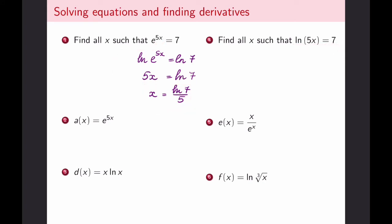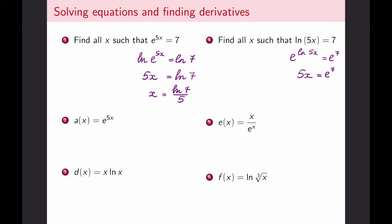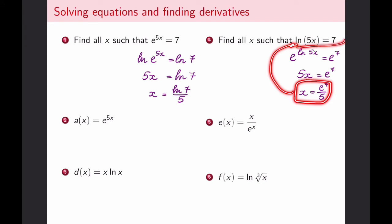If I start with a logarithm and want to solve for what's inside it, I take e to the power of both sides. On the left, the exponential and logarithmic functions cancel and I simply get 5x; on the right I have e to the power of 7. Dividing both sides by 5 gives x = e^7/5. It is good practice — particularly with functions whose domain is restricted, such as logarithms which cannot take negative inputs — to check your final solution to make sure it's not an extraneous root.